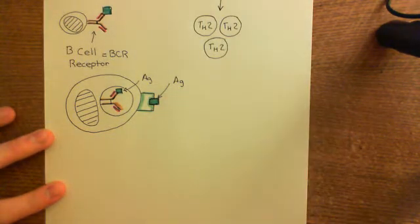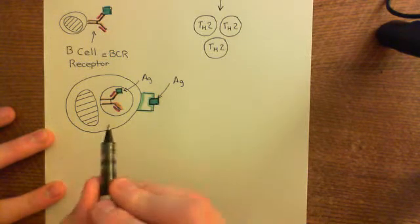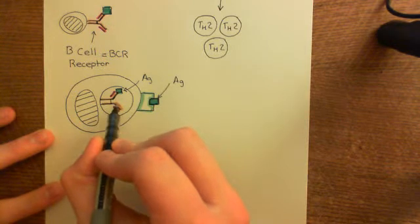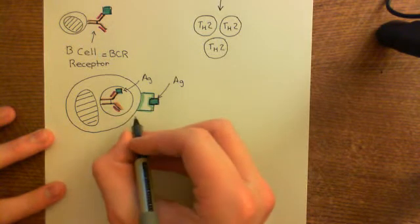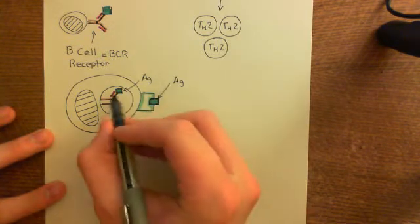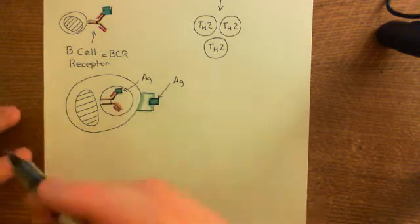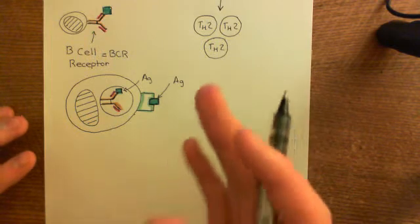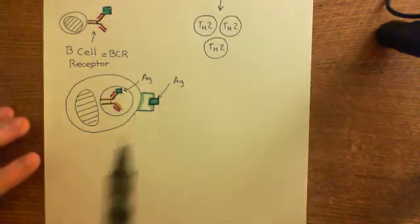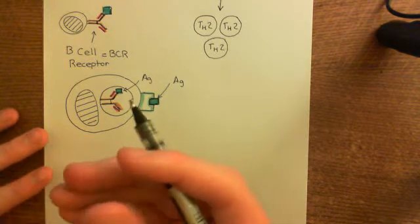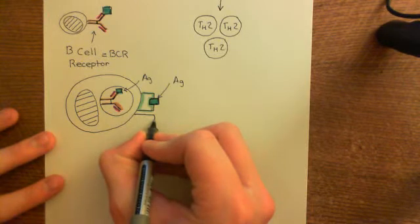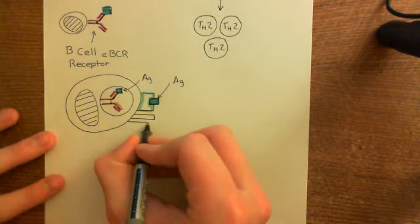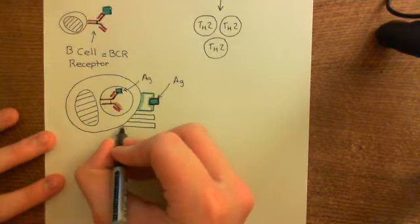This B-cell will also put co-stimulatory molecules on its surface, so it's a professional antigen-presenting cell as well. It will be exposed to pathogen-associated molecular patterns coming in through the lymph and reaching these B-cells. The B-cells will have pattern recognition receptors on their surface which are activated by the PAMPs, and that will lead to the B-cell starting to express CD40 and either B7.1 or B7.2, or both, but only one is actually needed.